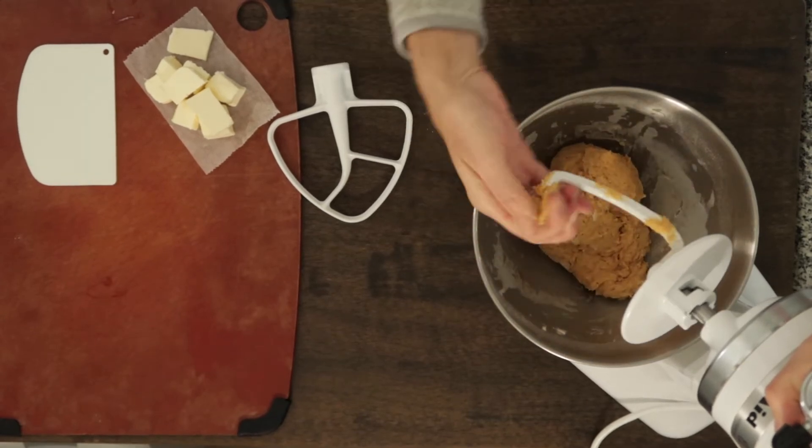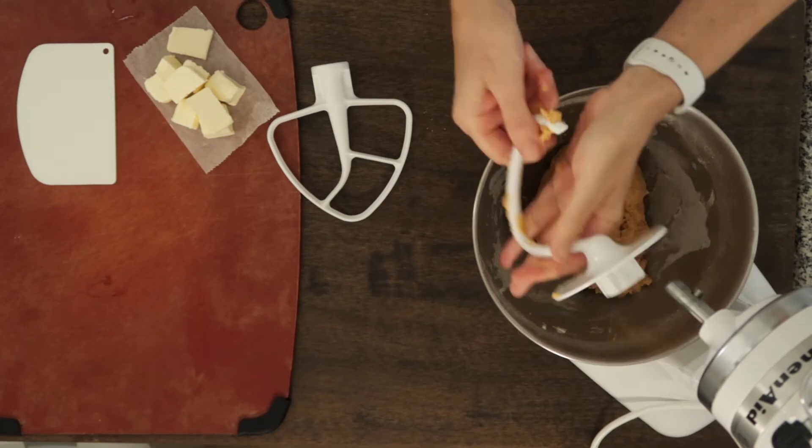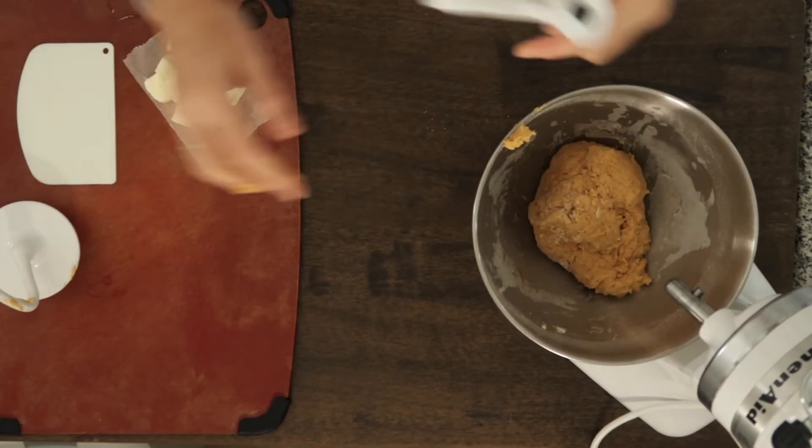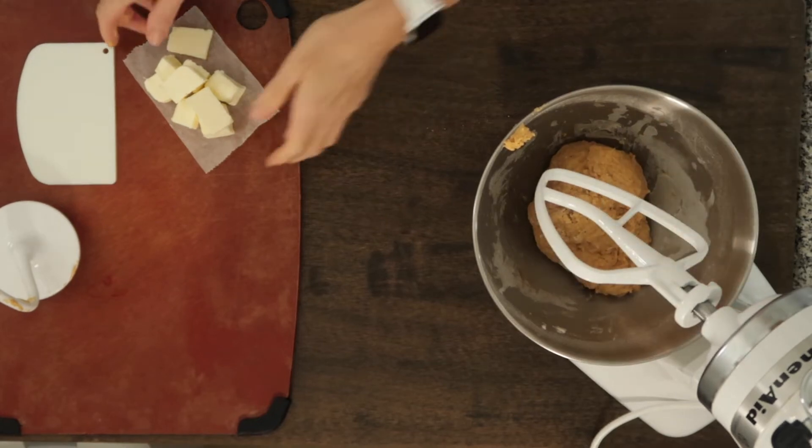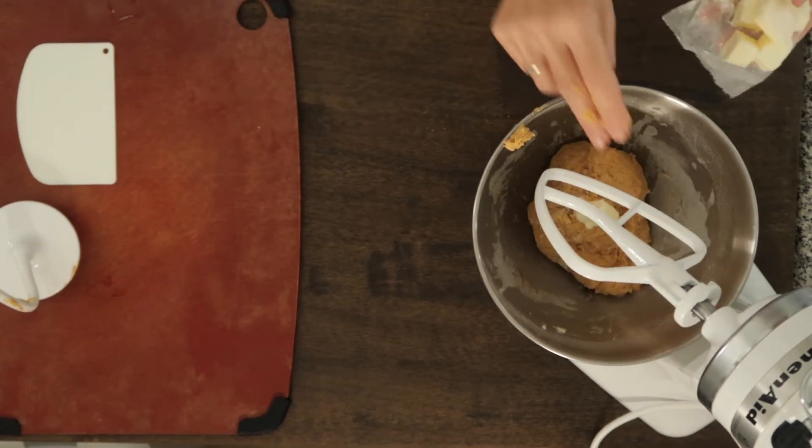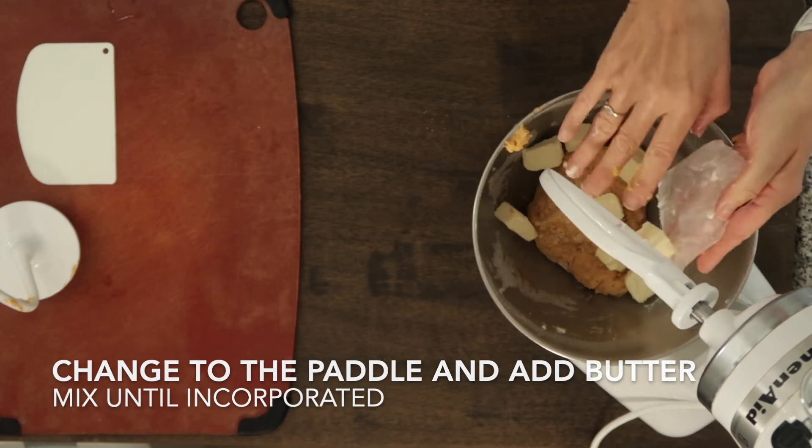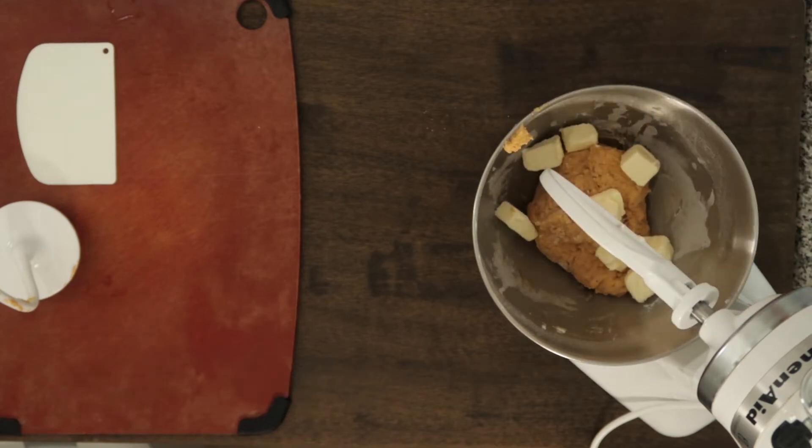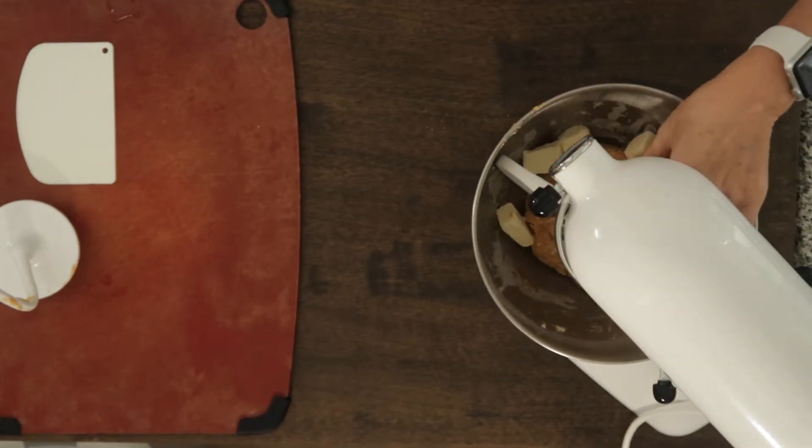Remove the dough from the hook, that's always so important. If it's just clinging to the hook, it's not developing. It's actually the dough mixing against the bowl that helps it develop. Change, add the butter. It helps to have the butter at room temperature and the butter is cut into pieces.